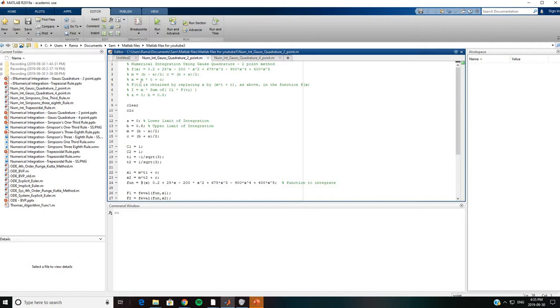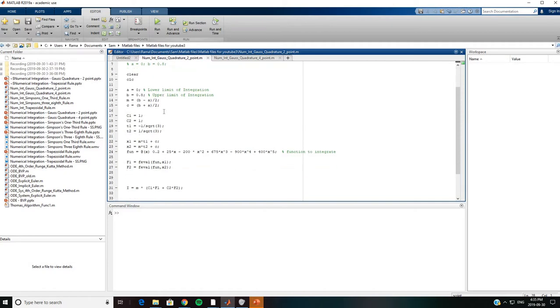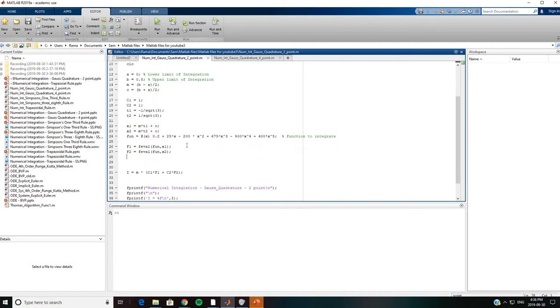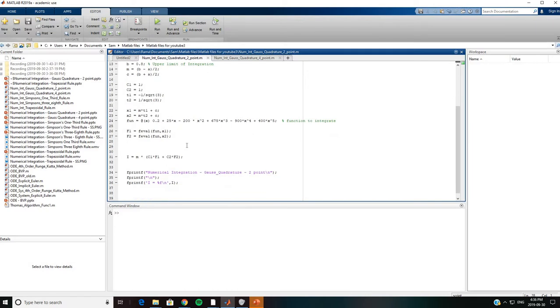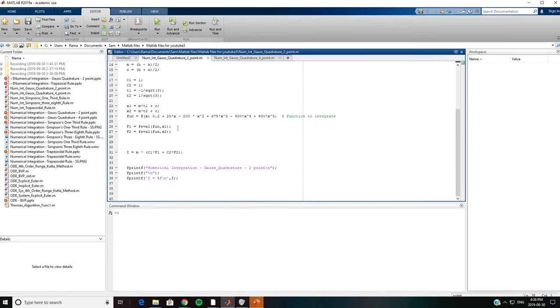We create a function f(t) from the above function f(x). Once that is done, we have I equals m times the sum of C_i times f at t_i. Here a equals 0 and b equals 0.8, and C_1 and C_2 are given as 1, and t_1 and t_2 as negative 1 over square root of 3 and positive 1 over square root of 3.